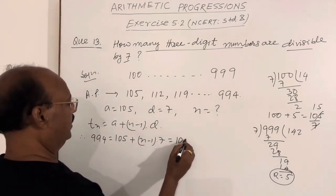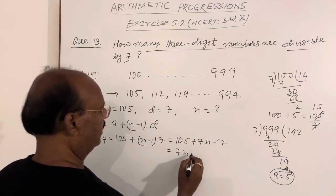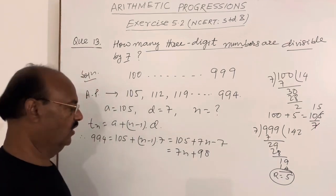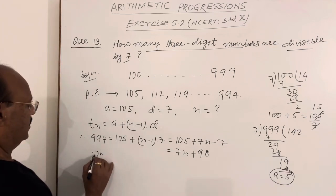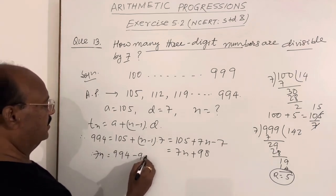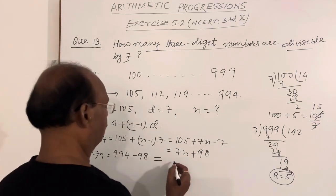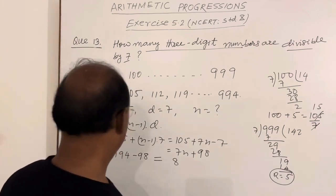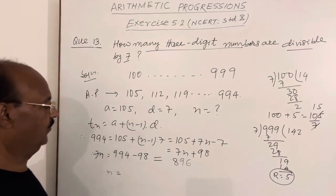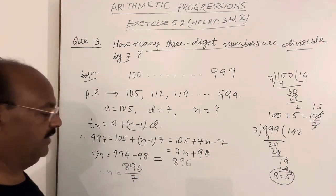This is equal to 105 plus 7n minus 7, and this equals 7n plus 105 minus 7, which is 98. Therefore, 7n equals 994 minus 98, and this is equal to 896.